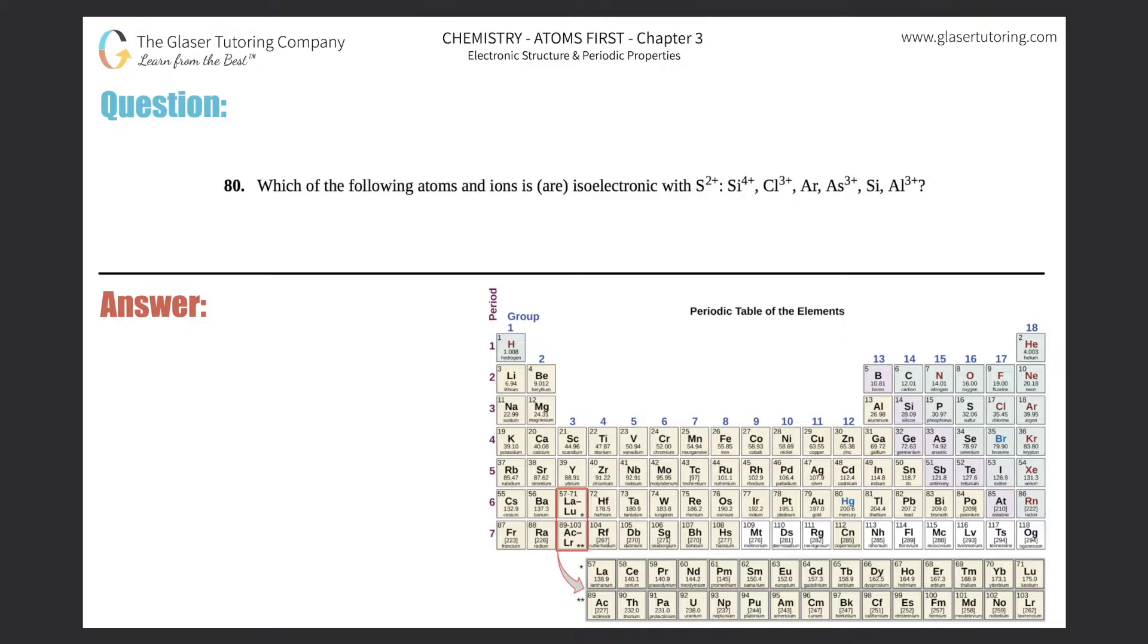Number 80: Which of the following atoms and ions is or are isoelectronic with S2+? We have Si4+, Cl3+, Ar, As3+, Si, and Al3+. We did a very similar problem in number 79, so if you want more practice you could go back to that one. It's pretty straightforward.